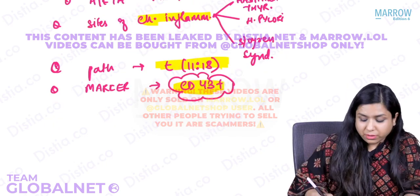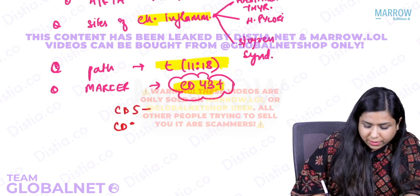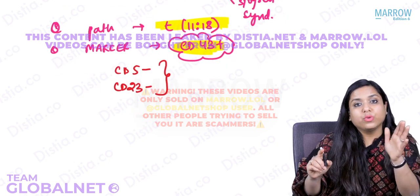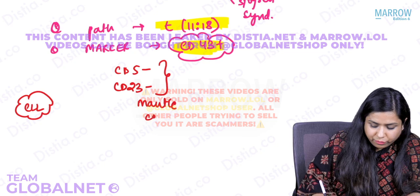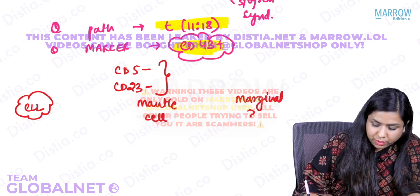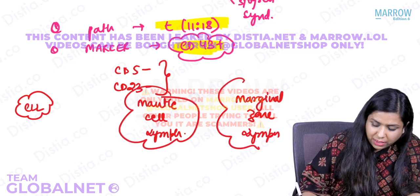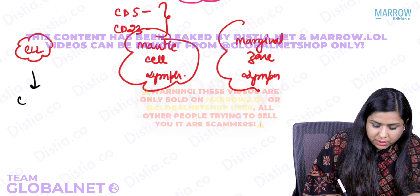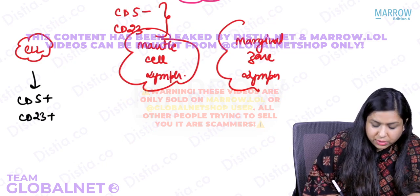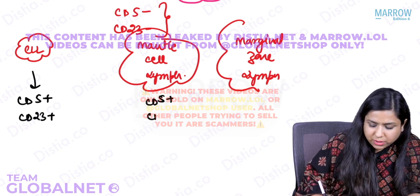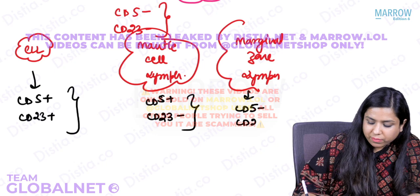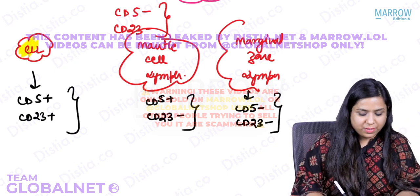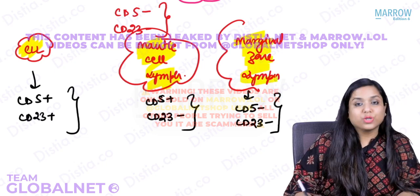Important immunophenotype comparison for MCQs: CLL is CD5 positive and CD23 positive; mantle cell lymphoma is CD5 positive and CD23 negative; marginal zone lymphoma is CD5 negative and CD23 negative. Please remember these three profiles. Also, marginal zone lymphoma histologically shows lymphoepithelial lesions.